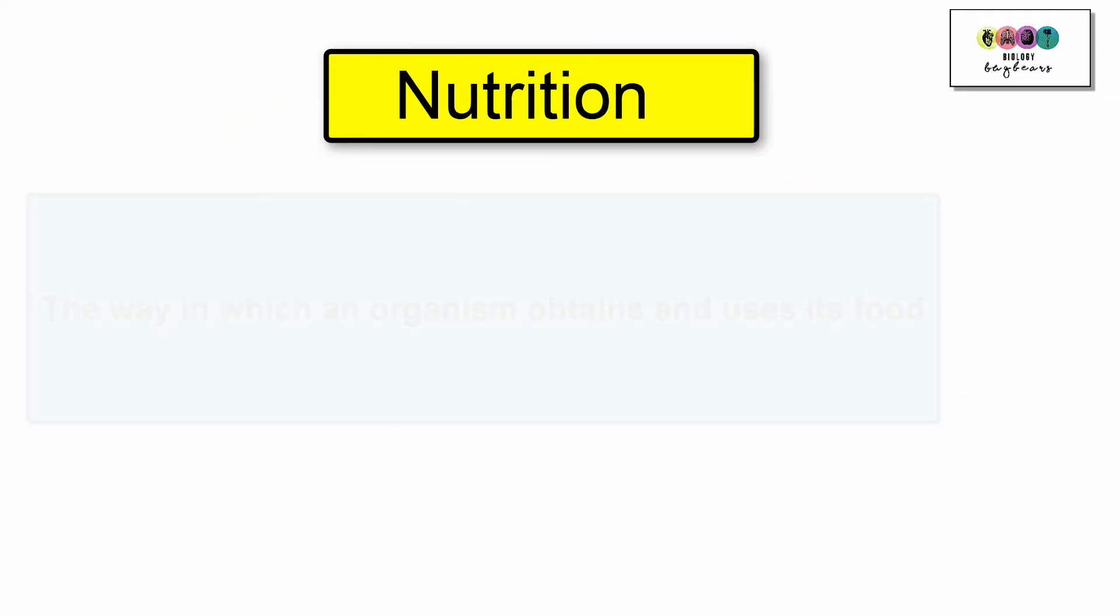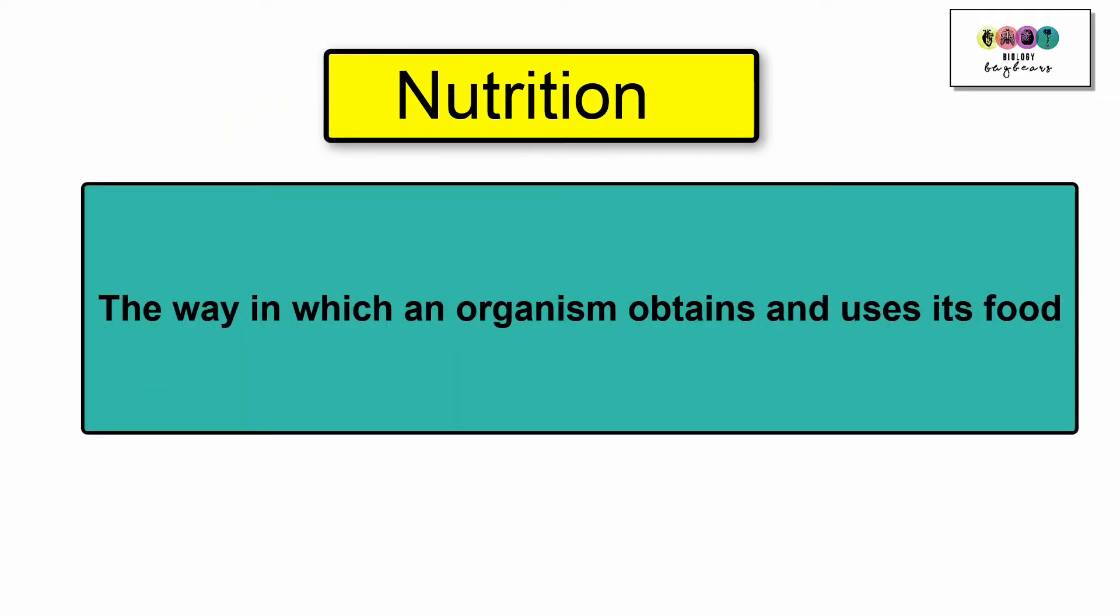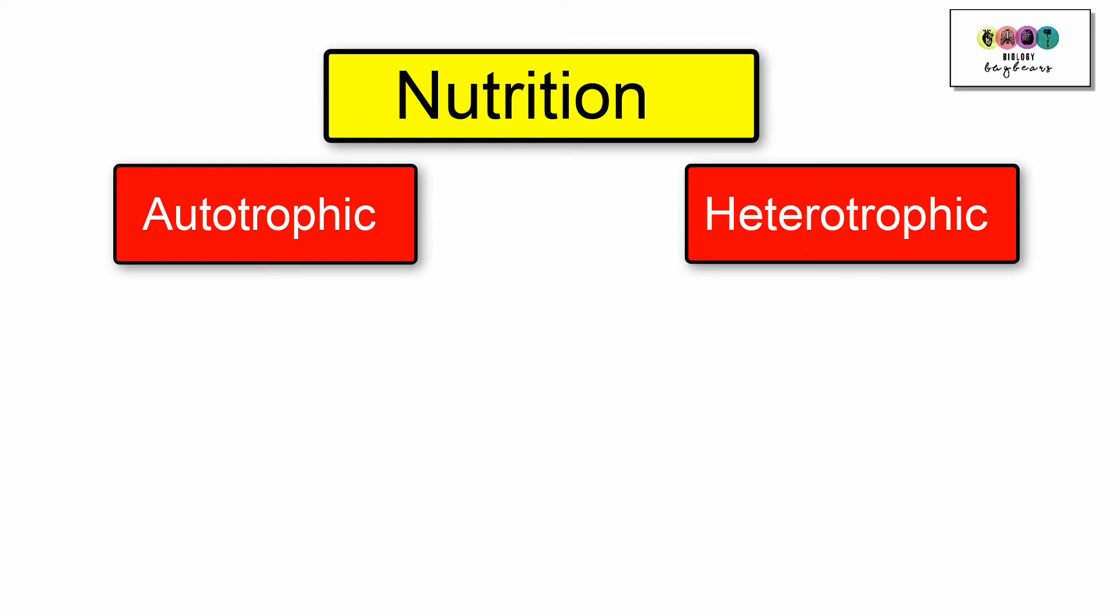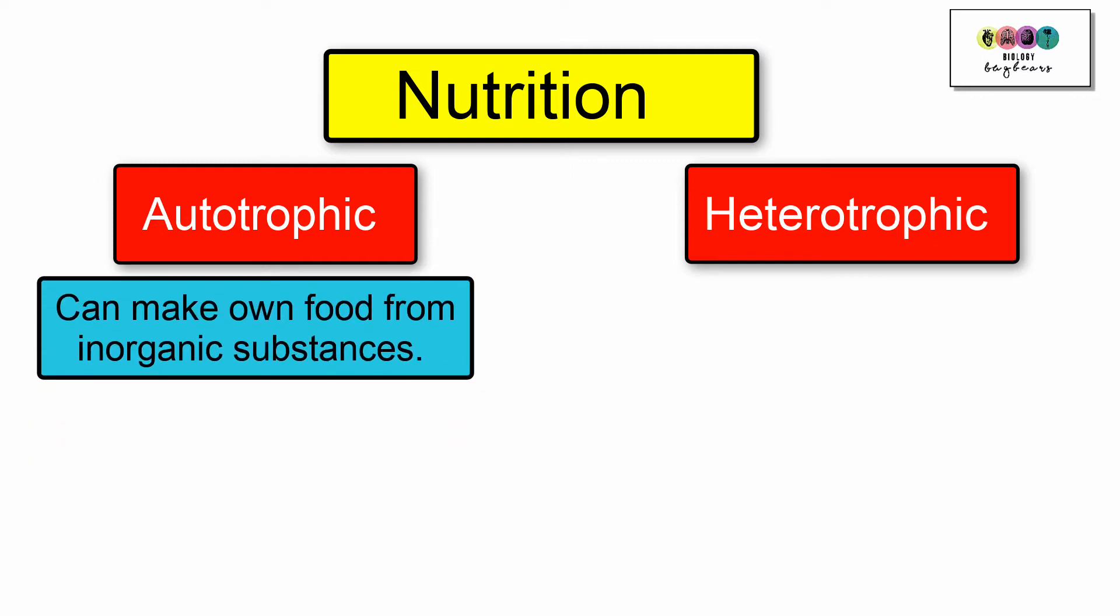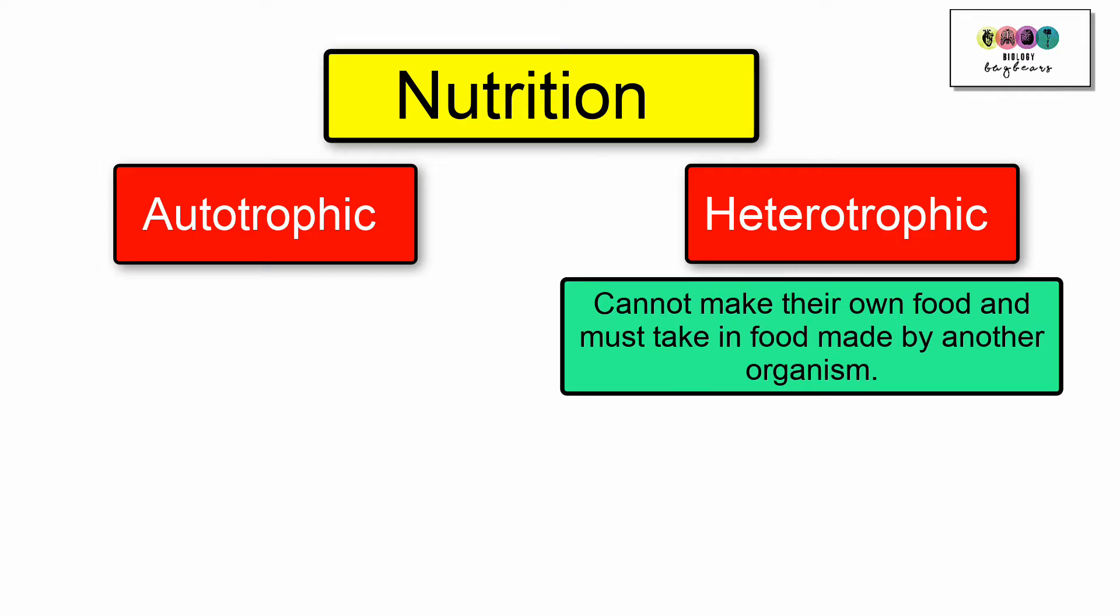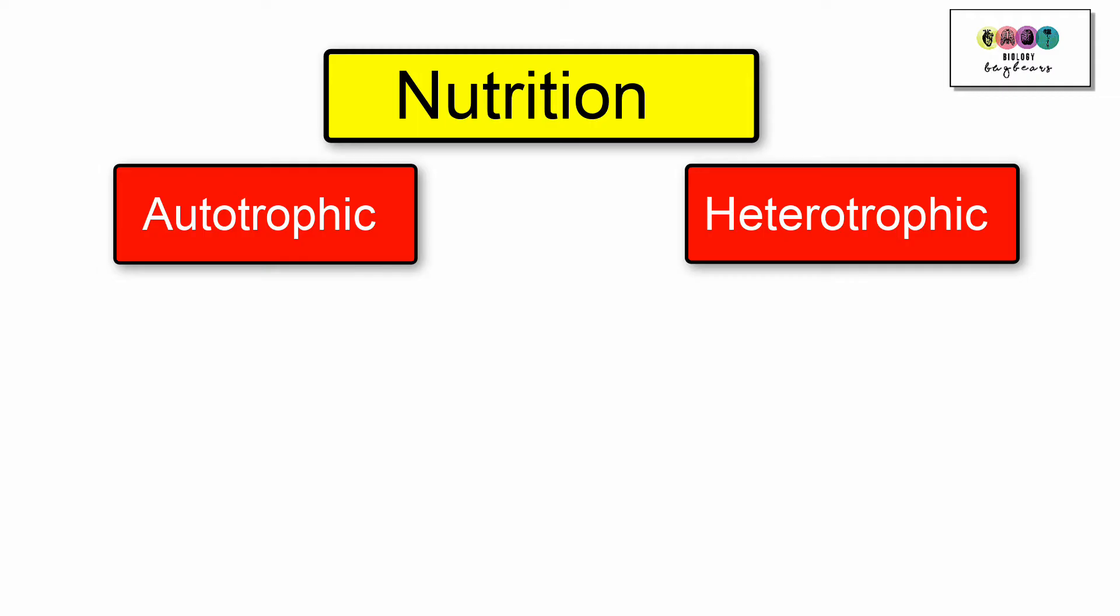Nutrition. This is the way in which an organism will obtain and use its food and this applies to bacteria as well. What is their mode of nutrition? So bacteria can be either autotrophic or heterotrophic. Autotrophic means that they can make their own food from inorganic substances and heterotrophic means that they cannot make their own food and they must take in food made by another organism.